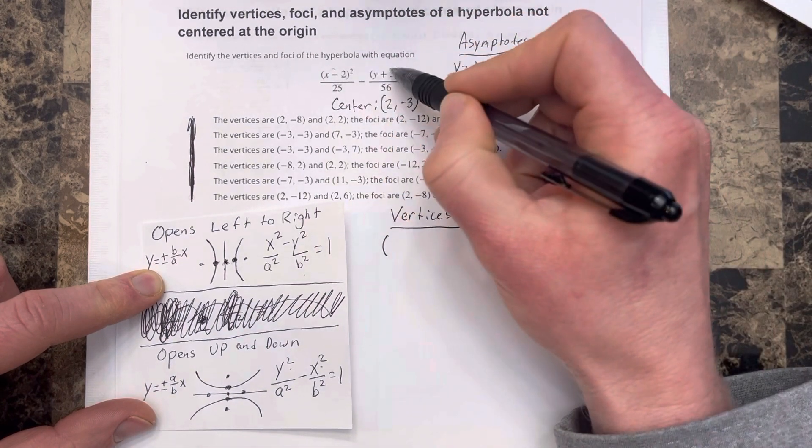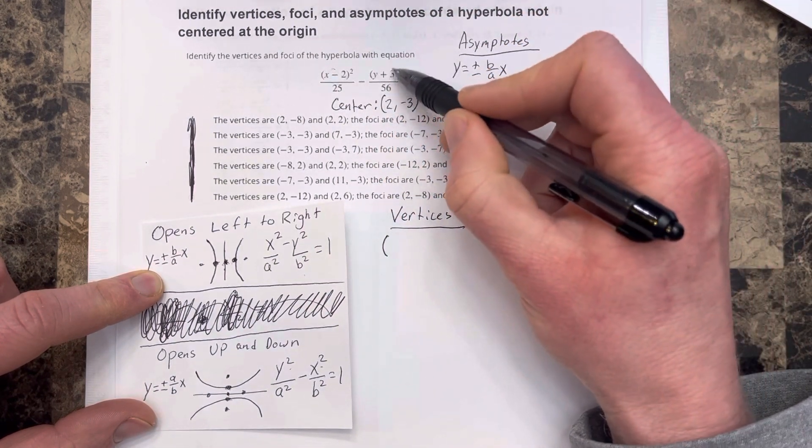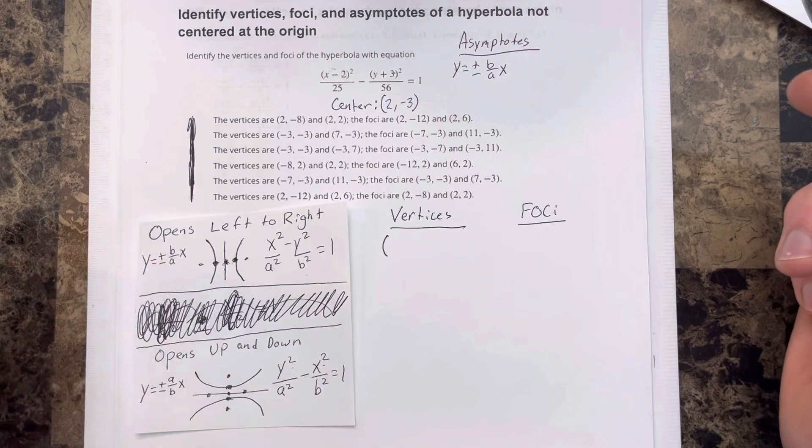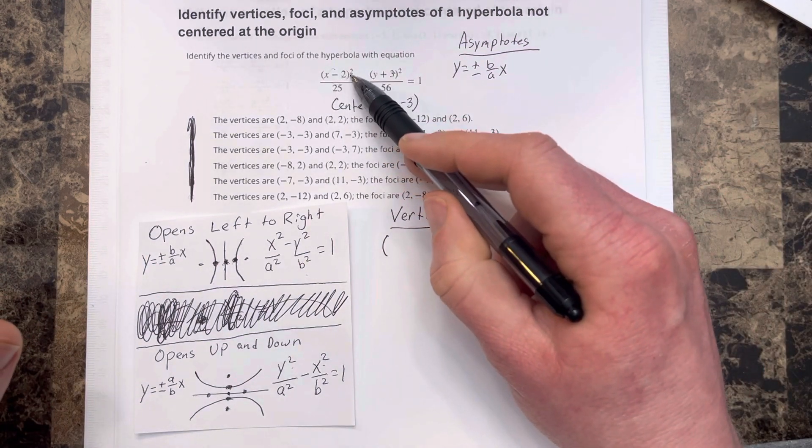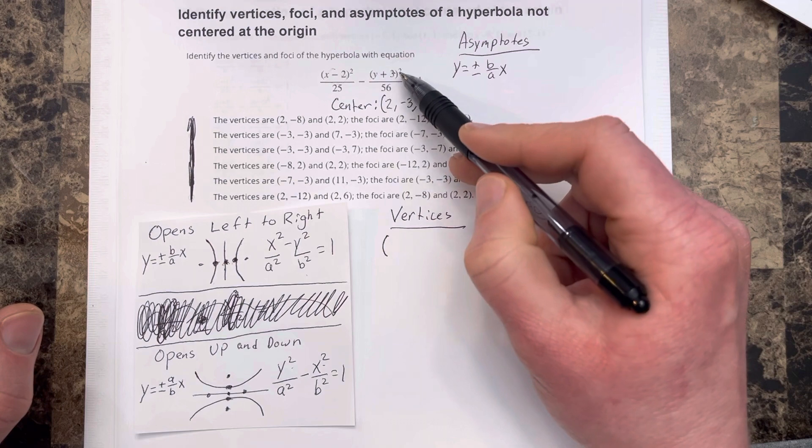Remember, it's always the opposite sign coming out of that formula because the formula is always x minus h squared and then y minus k squared.